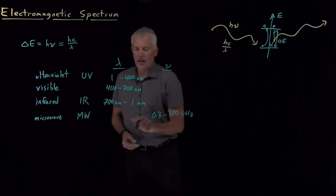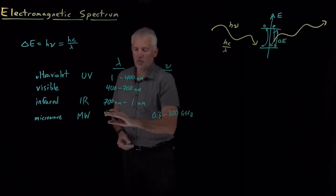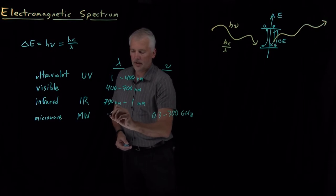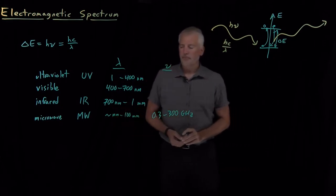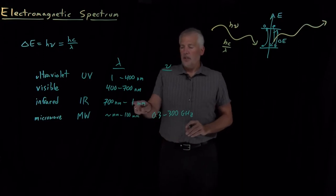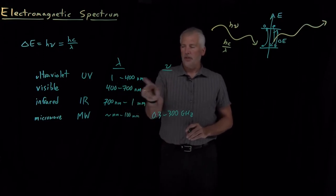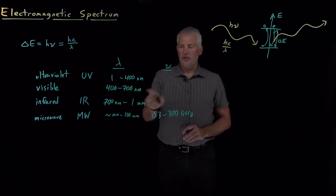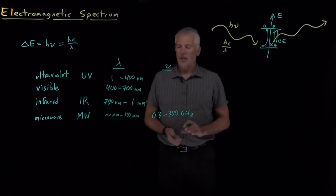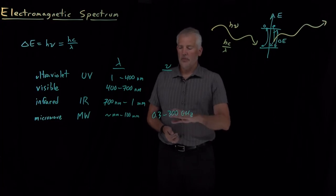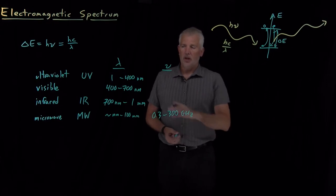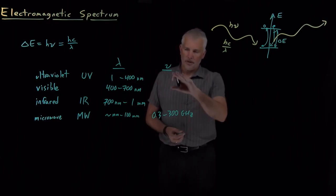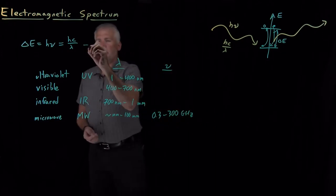That frequency, of course, correlates to some wavelength — roughly speaking, the millimeters to hundreds of millimeters range or so. Likewise, we could calculate the frequency associated with ultraviolet, visible, or infrared photons. But it turns out the most convenient units to talk about — not just for microwave photons but for several different portions of the spectrum — are not actually wavelength or frequency, but a different term, which we'll introduce now.